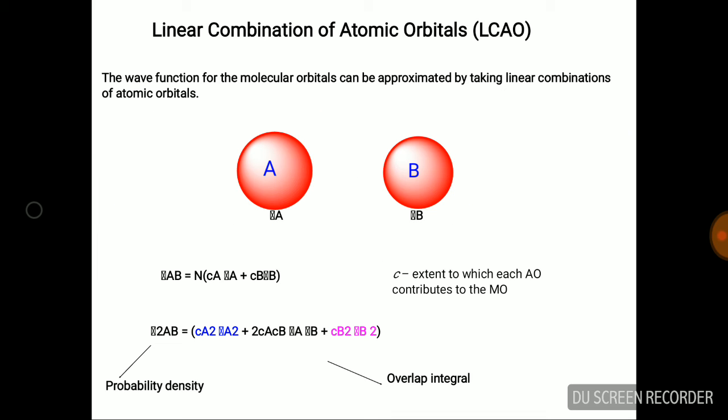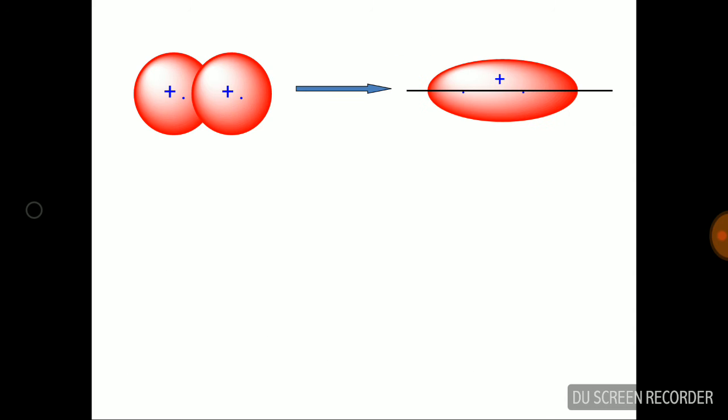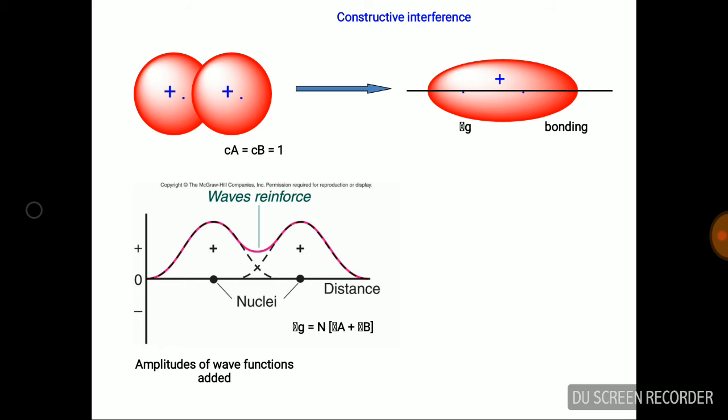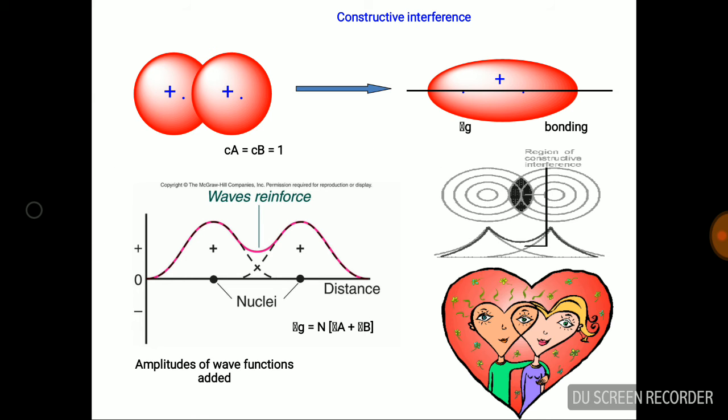The wave function of molecular orbital depends upon the nature of overlapping. It may be additive or subtractive overlapping. In additive overlapping, the electron density between two molecular orbitals is maximum and the wave function of the molecule can be calculated by (ψA + ψB)².